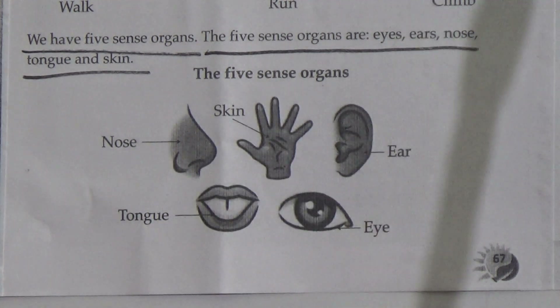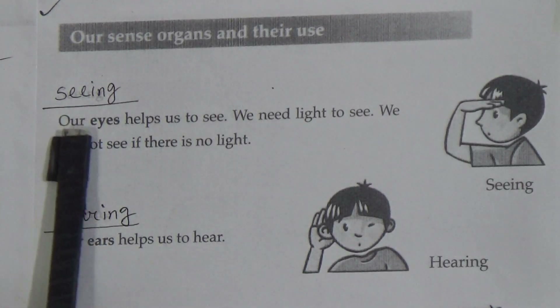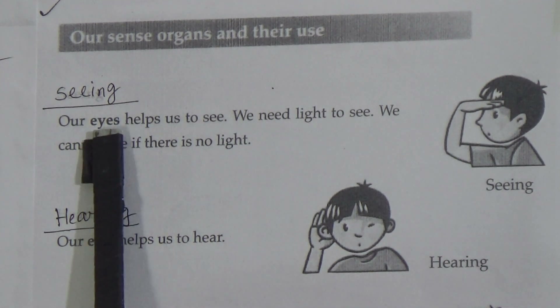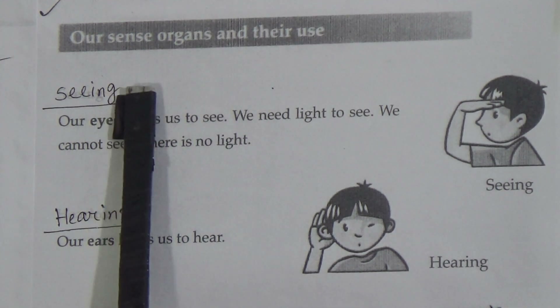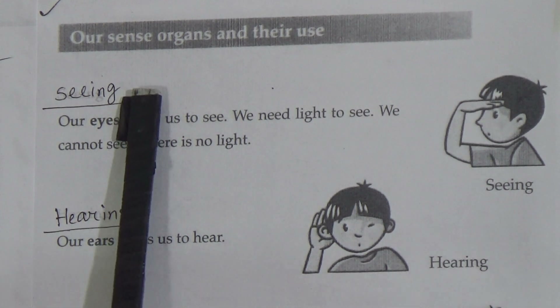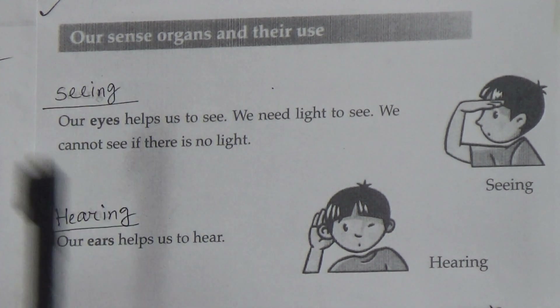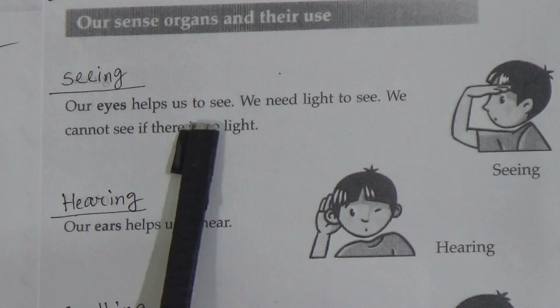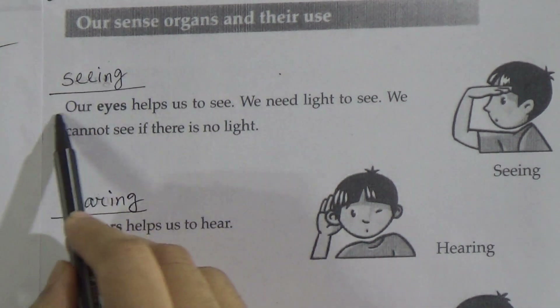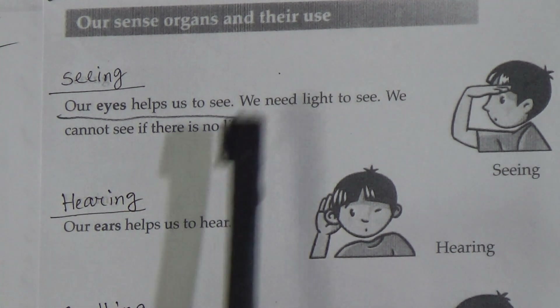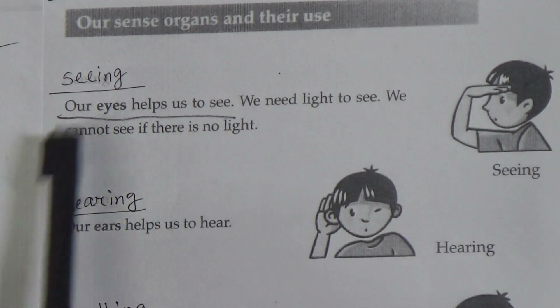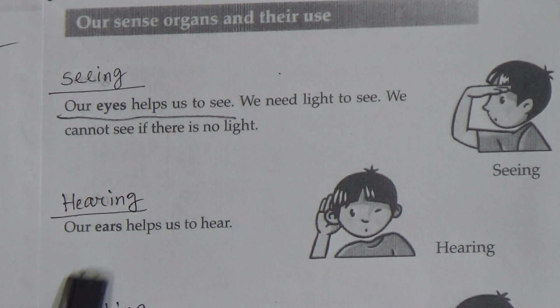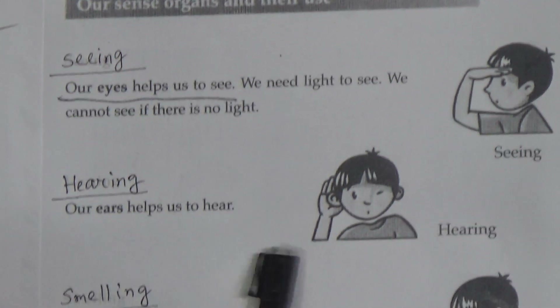Now, our sense organs and their uses. We have five senses: seeing, hearing, smelling, tasting, and feeling. First, seeing — our eyes help us to see, so underline this line. We need light to see; we cannot see if there is no light. Now hearing — our ears help us to hear — underline this line.